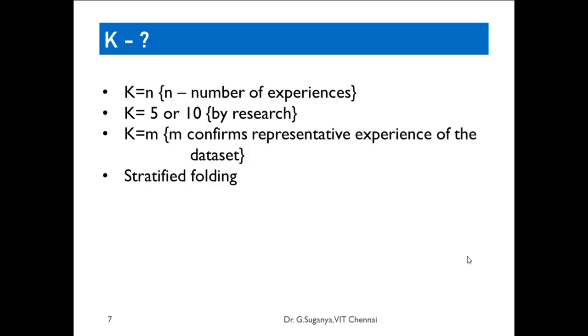Third methodology is k could be m, where m confirms representative experience of the dataset. I mean, you try to identify how many experiences are. I will tell you a small example. In COVID-19, let us say, the experiences are taken from three different areas. So k should be equal to m because the three areas has to be covered. Those three are the representative datasets that we need to understand.